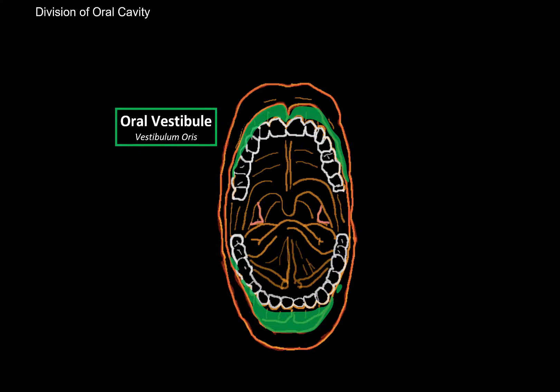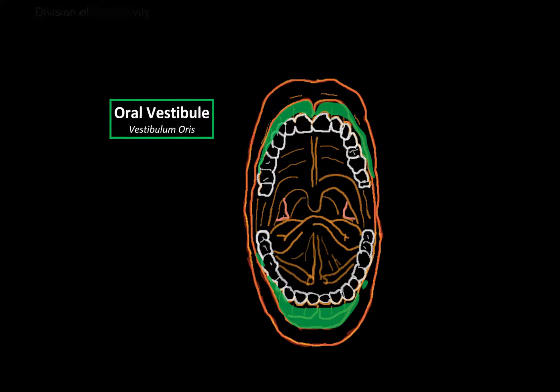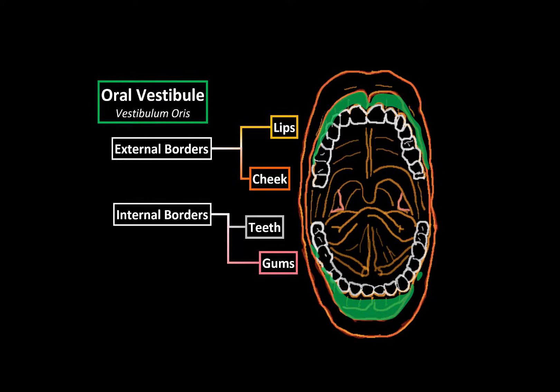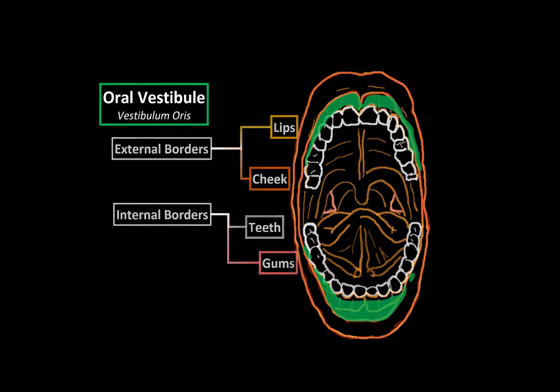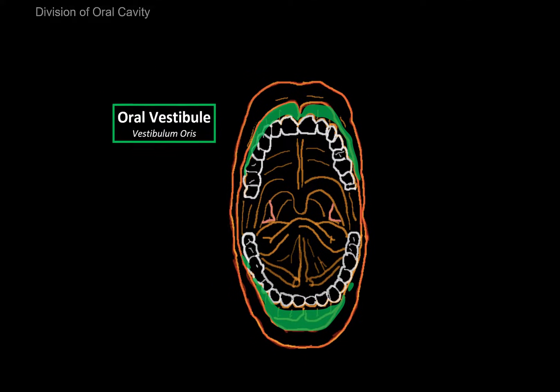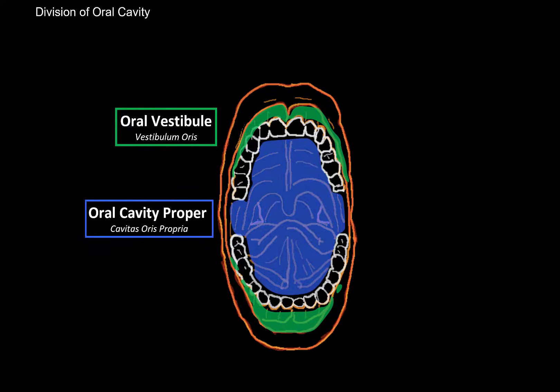In our last video, we covered the anatomical structures associated with the oral vestibule, which consists of the external borders — the lips and the cheeks — and the inner borders, which are the teeth and gums. Now let's wrap up the anatomy of the oral cavity by going through the anatomical structures associated with the oral cavity proper.